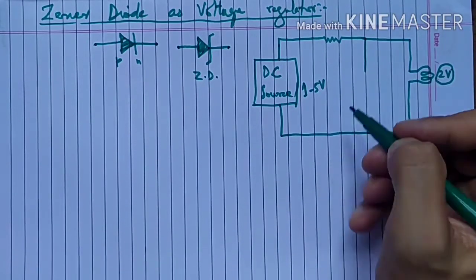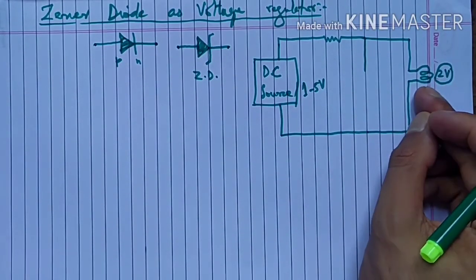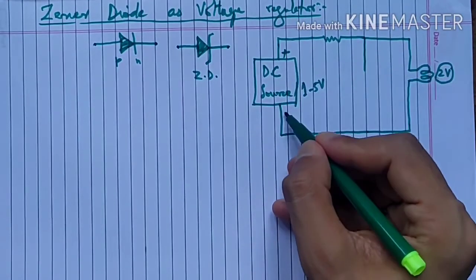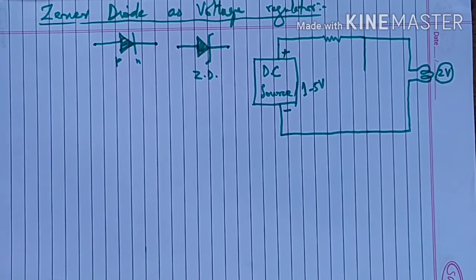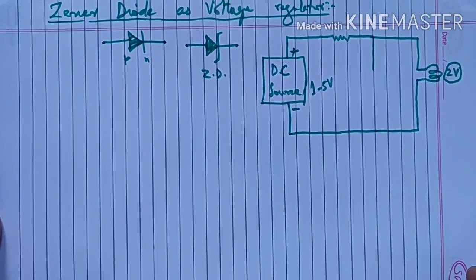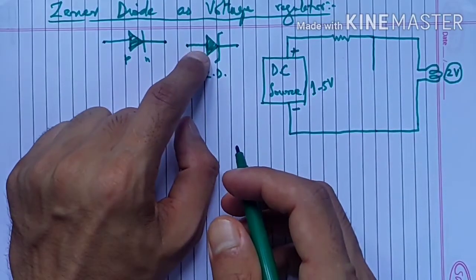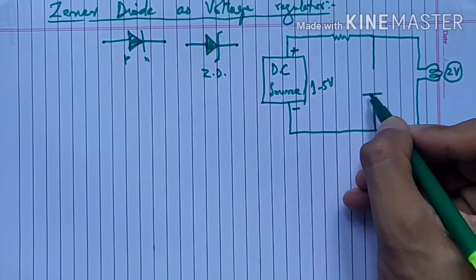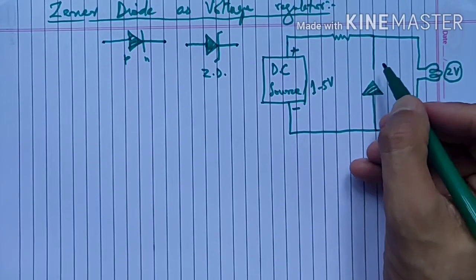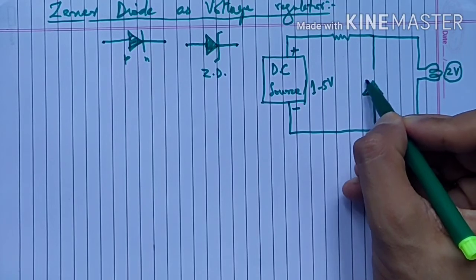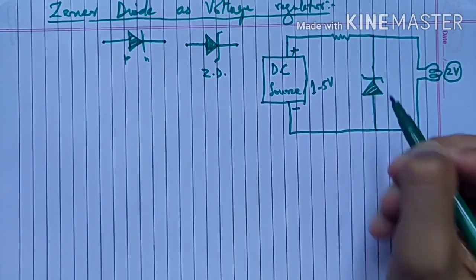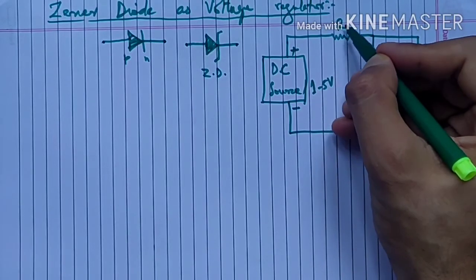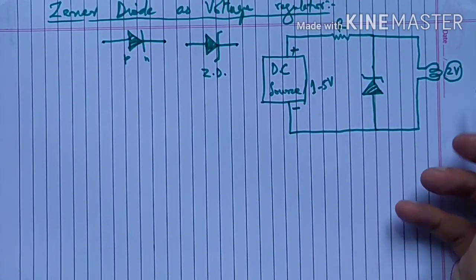यहाँ पे हम zener diode लगाते हैं - जो आपके पास output है, bulb है, जो भी load होगा उसके parallel में लगाते हैं। Say this is positive terminal of DC source and this is negative terminal of DC source. And we know that zener diode किस bias में काम करेगा - reverse bias में। तो reverse bias means this triangular side should be connected to negative. यह हमने zener diode को connect किया, और यहाँ पे कोई resistance की value है, say it is R.